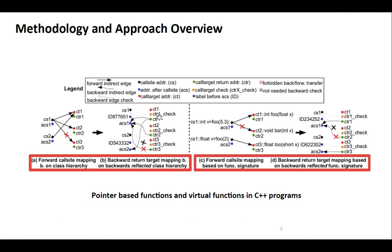Our methodology is like this. On the left-hand side you can see what kind of technique we applied for function pointer based calls to functions. Essentially, we construct a function signature with the number of parameters passed from the caller to the callee, their types, and the return type. Based on that, we can determine for all the callees the call sites where they are actually allowed to return — essentially the places from where they are allowed to be called in the first place.